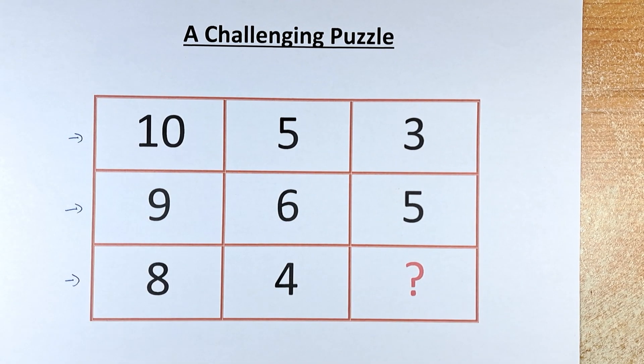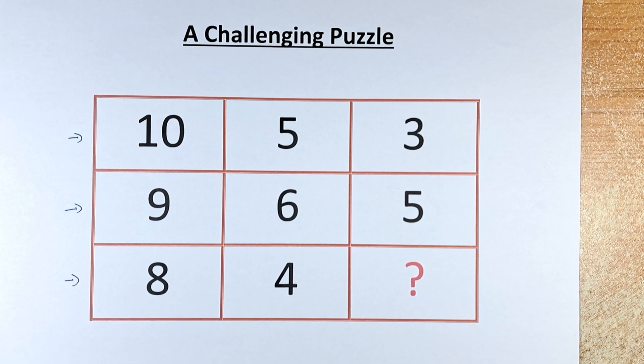So 10, 5 equals 3. 9, 6 equals 5. And 8, 4 equals the question mark. So what we're going to do is add the first two numbers.